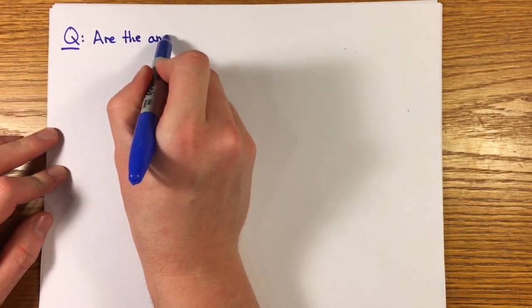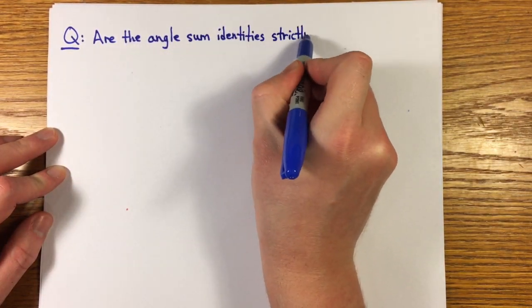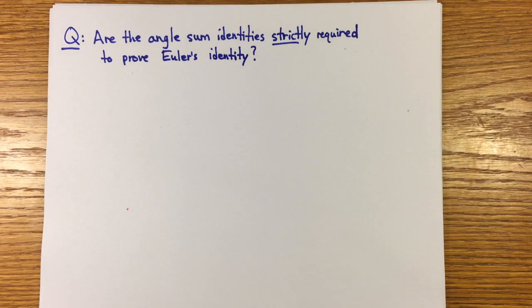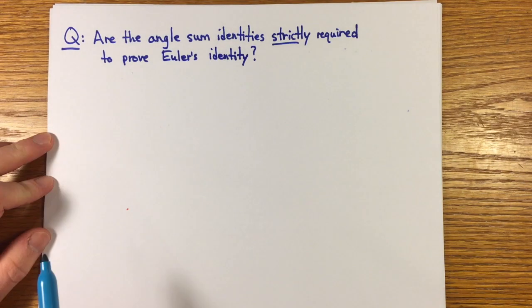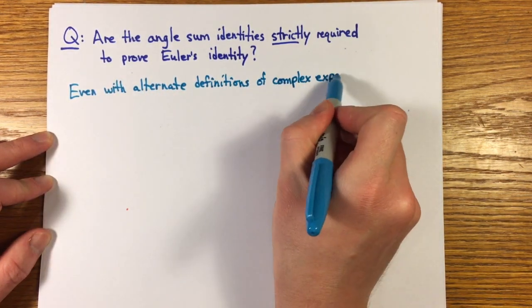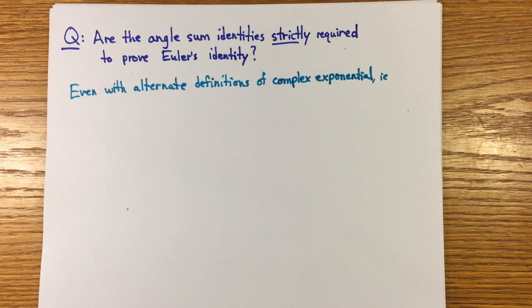Now, is it absolutely required to use the angle sum identities to prove Euler's identity? This question really gets into the weeds of choices about how these functions are defined. So, this is not something students usually think about, but it's enormously important for lecturers.